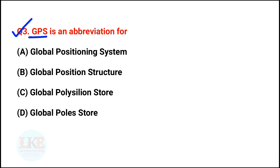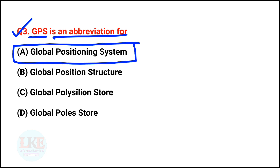GPS is an abbreviation for Global Positioning System. With the GPS system we can easily track someone's location. GPS is a satellite-based radio navigation system which is operated by the United States Space Force.